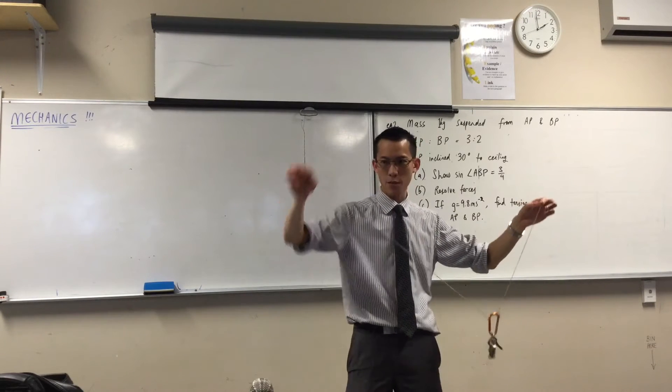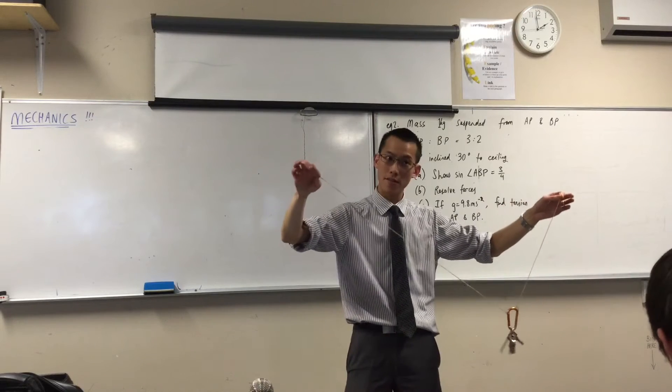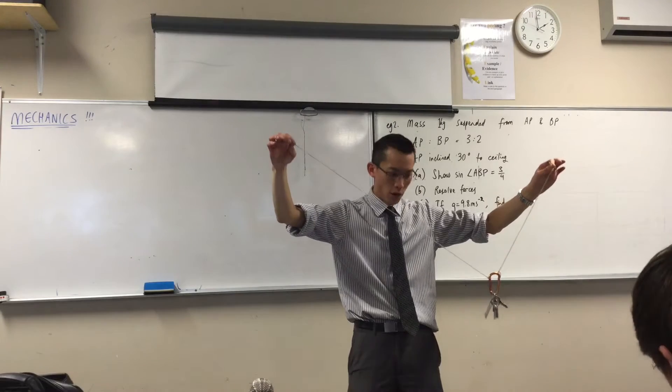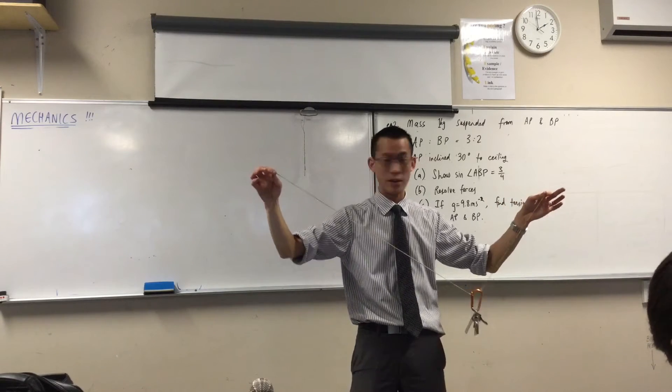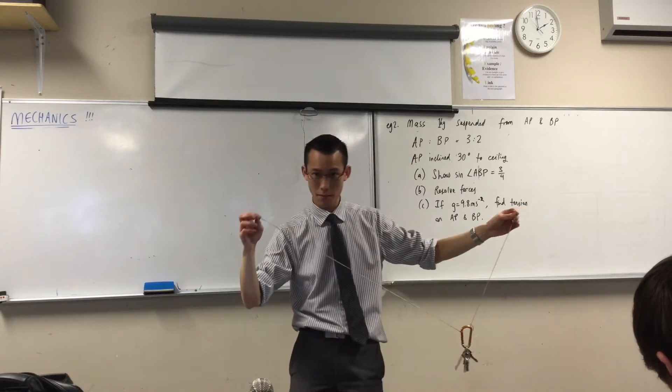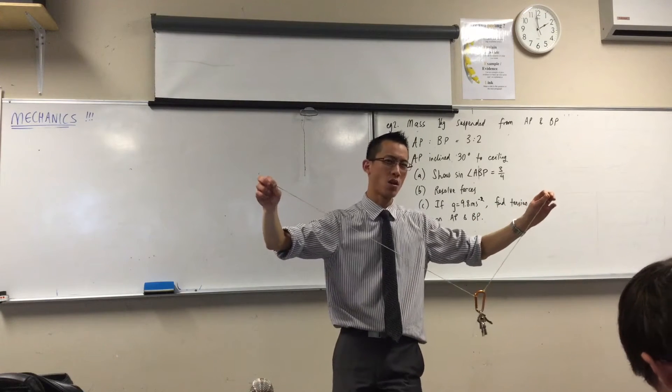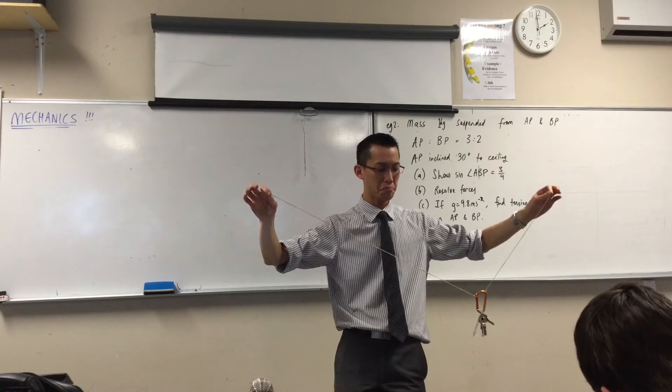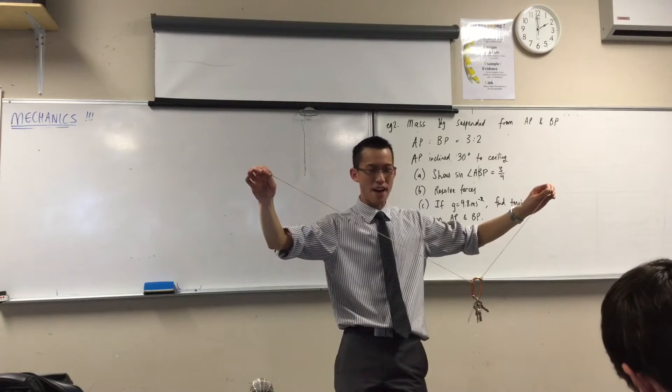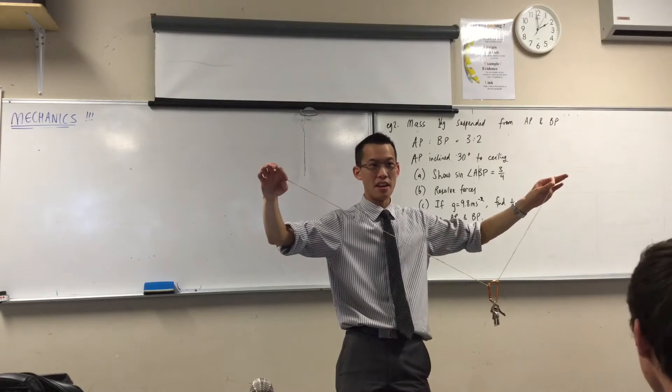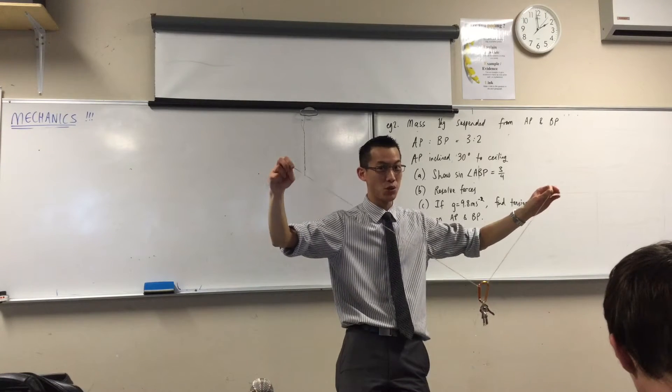So each of these strings is pulling upward on the mass. Now, because of the arrangement of the lengths of these, and also the angles that are formed here, the force that's being exerted by each of the strings, or AP and BP, is different. Now, why do you think this might matter? Like, solving a question like this, where might this be relevant? Where do you have things in real life that are suspended, that hang, that really, really matters?